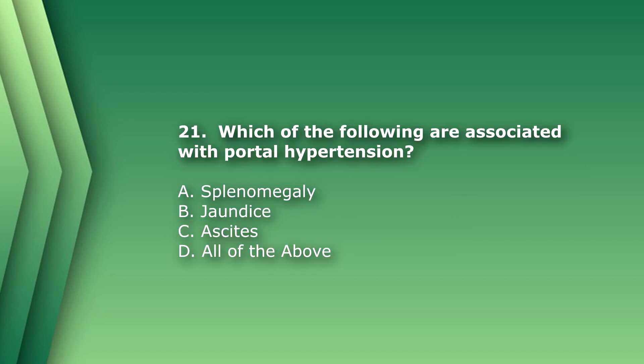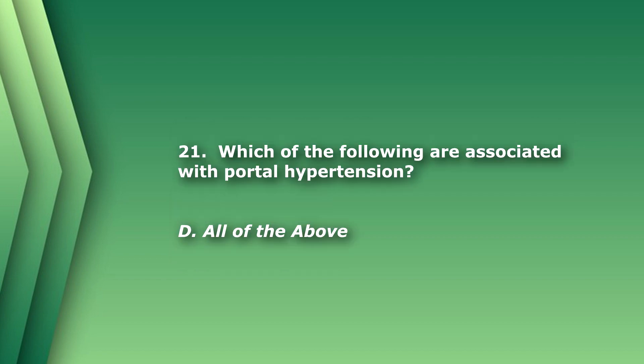Question 22: Which of the following are associated with portal hypertension? A) splenomegaly, B) jaundice, C) ascites, or D) all of the above. The answer is D) all of the above.